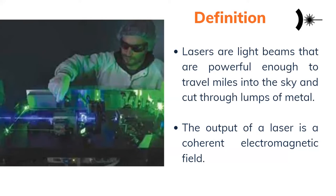What can be called a laser? Lasers are light beams that are powerful enough to travel miles through the sky and can cut lumps of metal. They have very powerful beams of light that can travel long distances and cut through metals. The output of a laser is a coherent electromagnetic field.